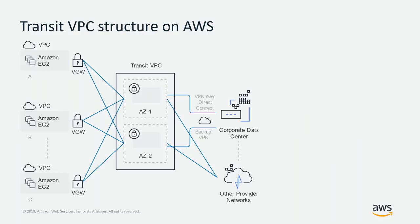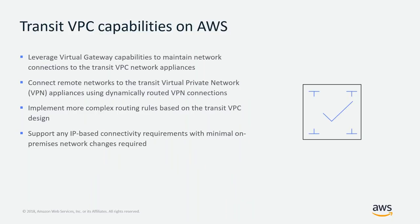The transit VPC is made up of two different availability zones so it's highly available. We put instances in each one that do VPN. In each of your spoke VPCs — where application development is going on or different parts of your business like shared services — we use VPN either through the virtual private gateway or through other VPN instances to provide centralized connectivity to the transit VPC. You can then send traffic back to your data center over Direct Connect or VPN by extending tunnels from the transit VPC back on-premises once, giving you central control into all your VPCs inside AWS.